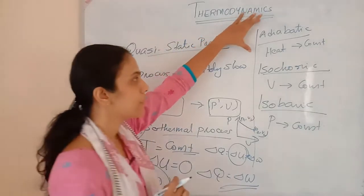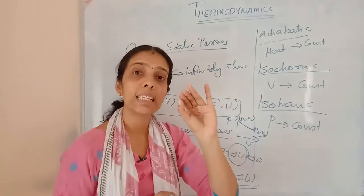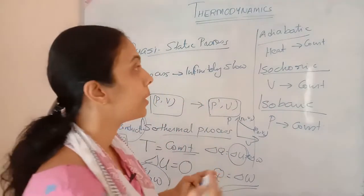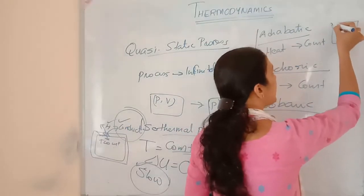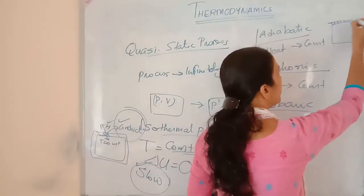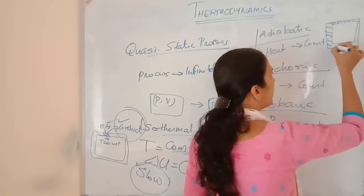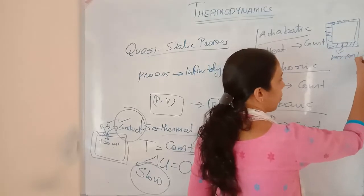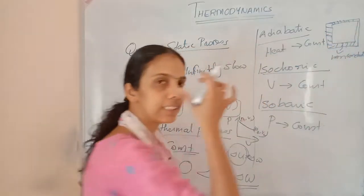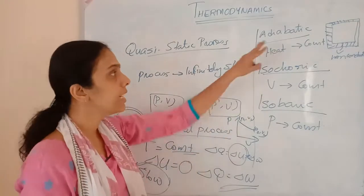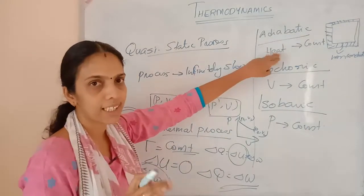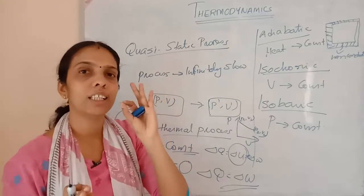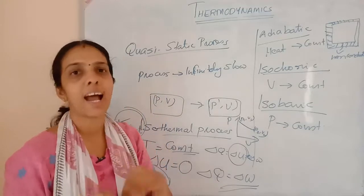In the adiabatic process, heat energy remains constant throughout — meaning the system must be maintained with a perfectly non-conducting wall. Only then will it not release or absorb heat energy. No absorption or release of heat energy should happen.